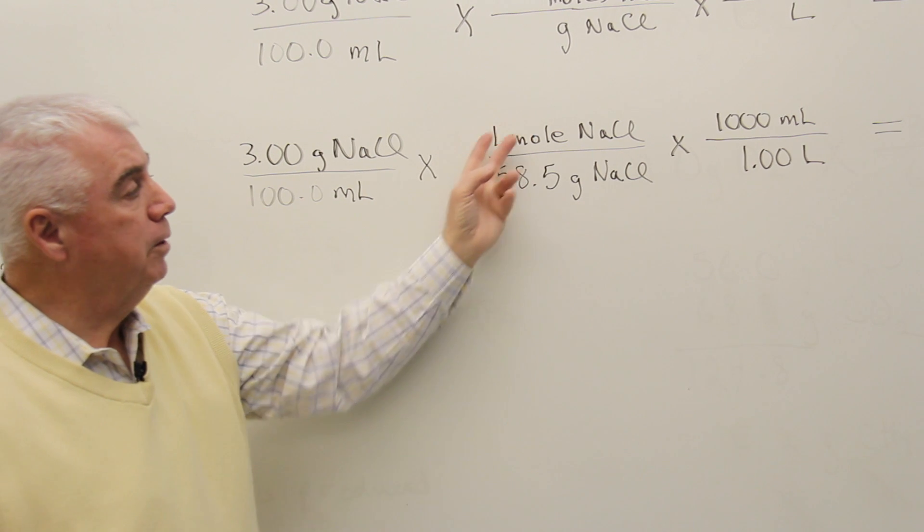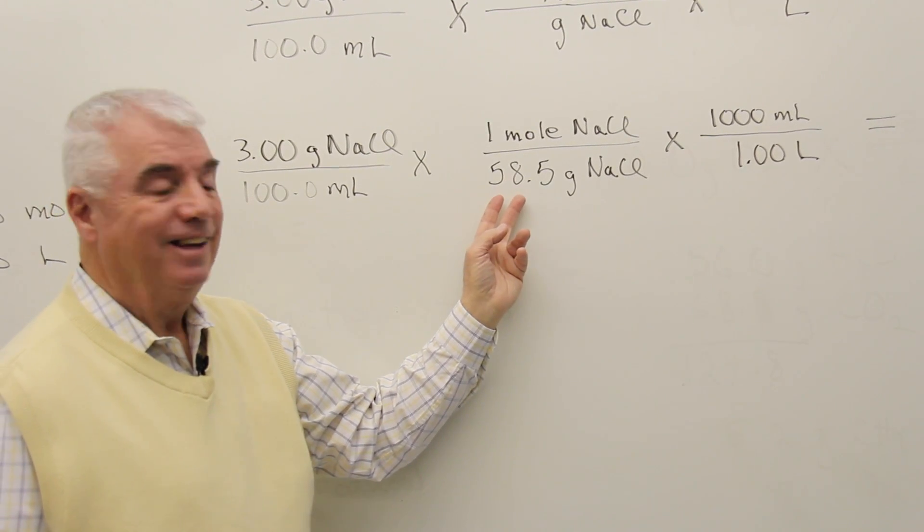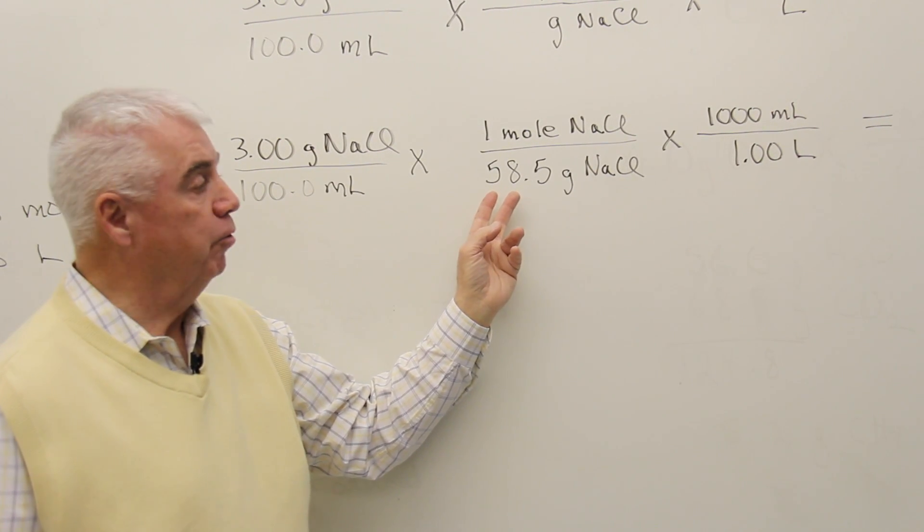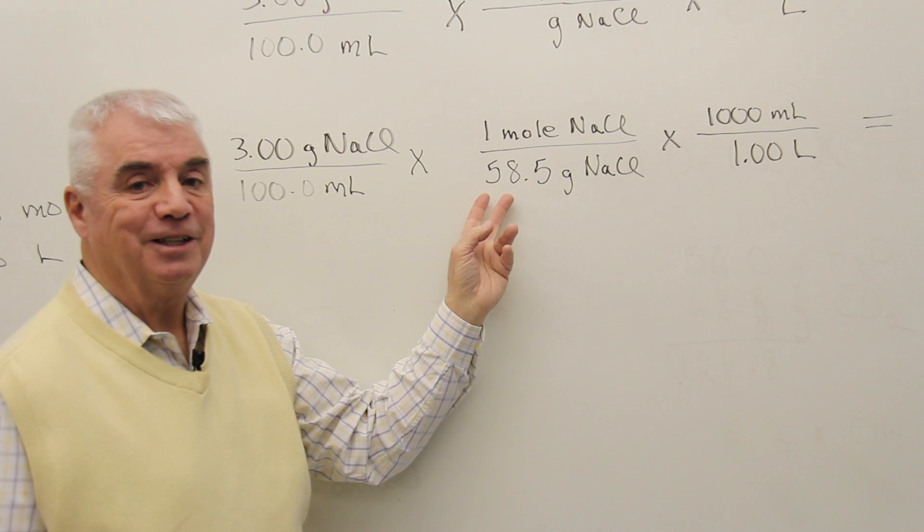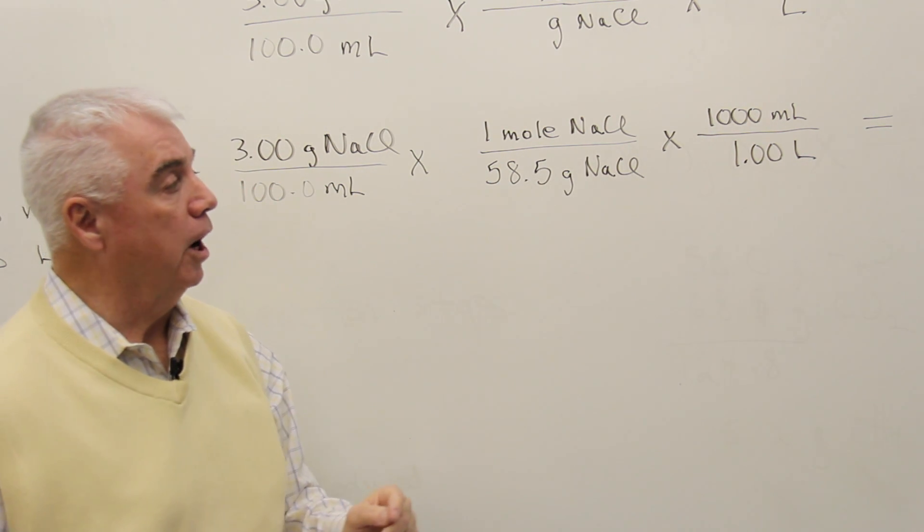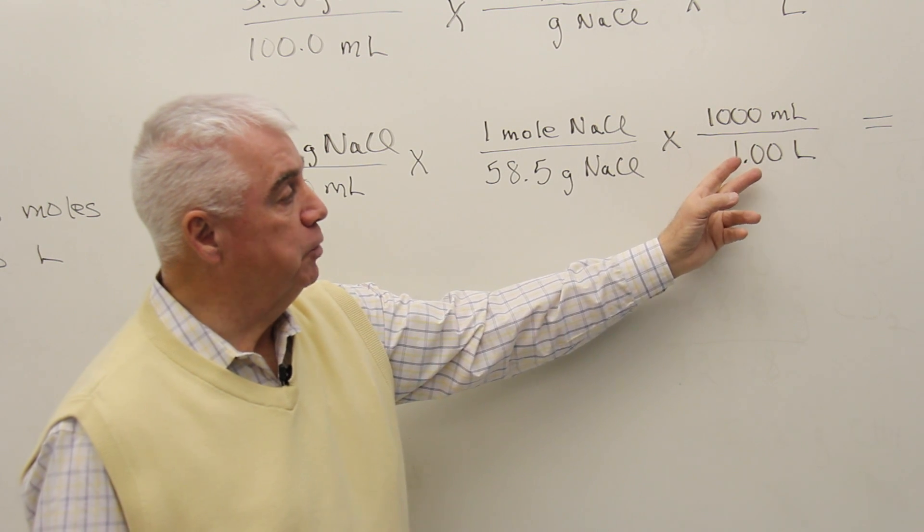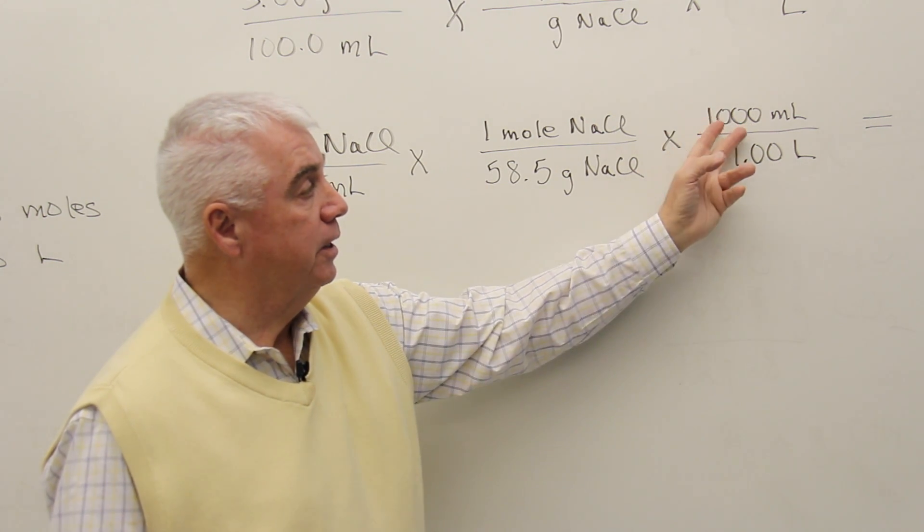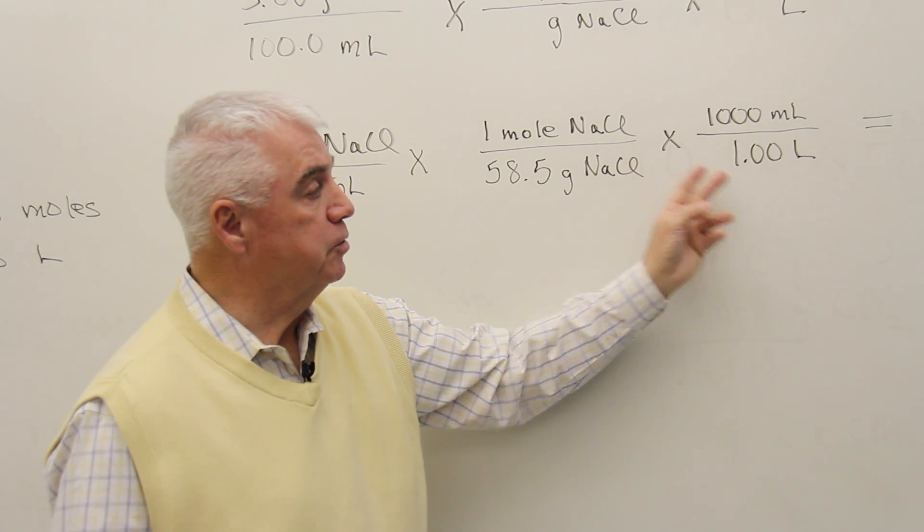Here's what we're given. One mole of sodium chloride is the molecular weight in grams. So we'd use the periodic table, look this up, 58.5 grams of sodium chloride. The relationship between liters and milliliters, 1,000 milliliters in every liter.